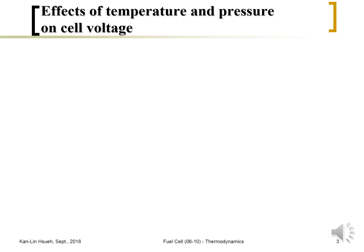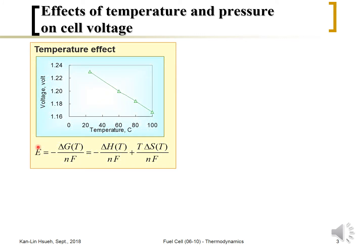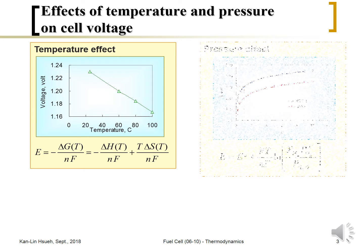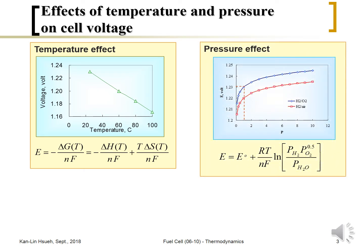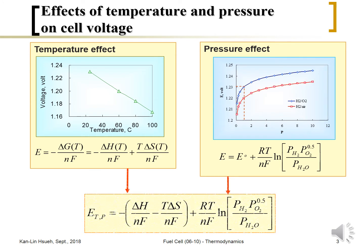From previous lectures, we mentioned that the cell voltage can be expressed as a function of temperature and pressure, and can be calculated at different temperature and pressure conditions from thermodynamics. We know the cell voltage decreases as temperature increases. From the Nernst equation, the cell voltage can also be expressed as a function of pressure. We can combine these two effects and summarize them into one equation.